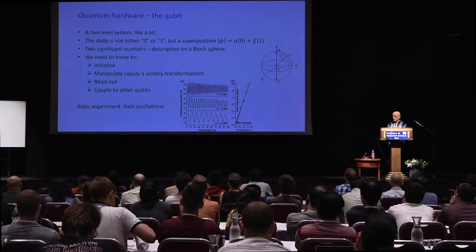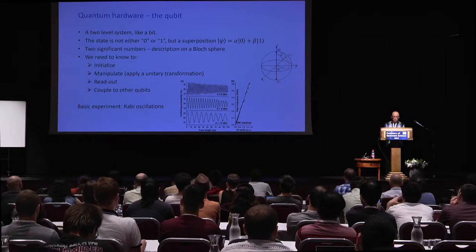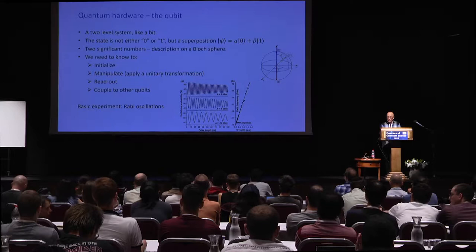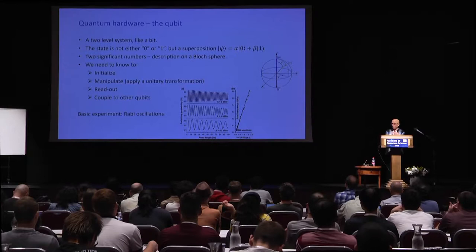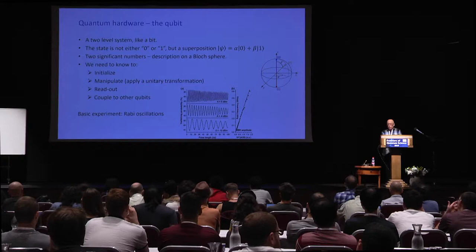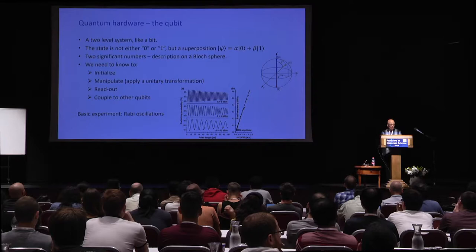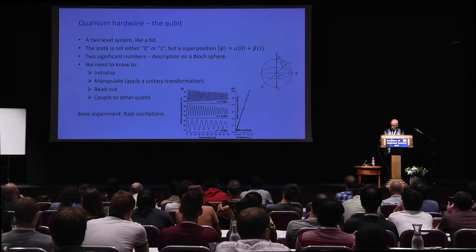A qubit, as you can read in Israel Hayom, is a two-level system. It has two states, zero and one. But unlike a classical bit, it can be in a superposition of zero and one with coefficients alpha and beta. Alpha and beta take continuous values, which makes a departure from the digital concept of classical computing. Since alpha and beta are two complex numbers, we can describe the state of the qubit on the Bloch sphere.